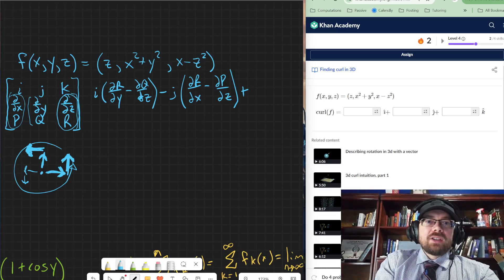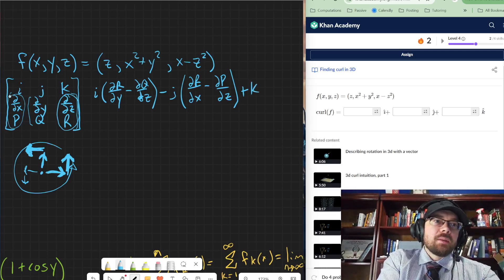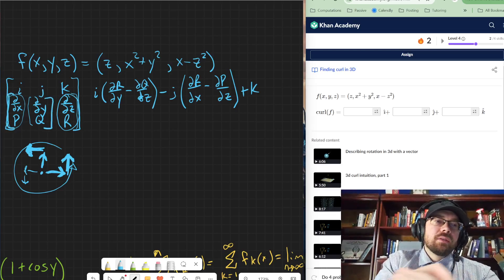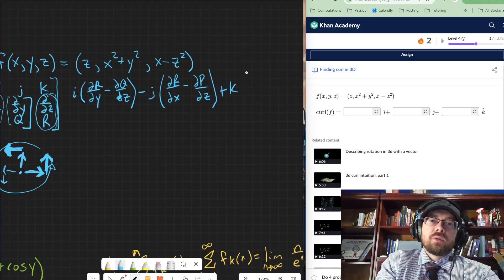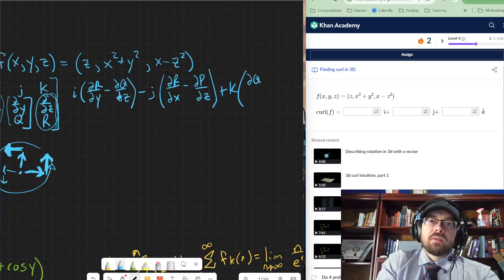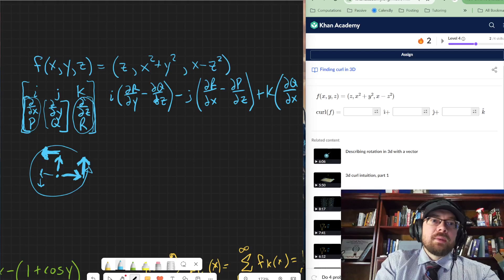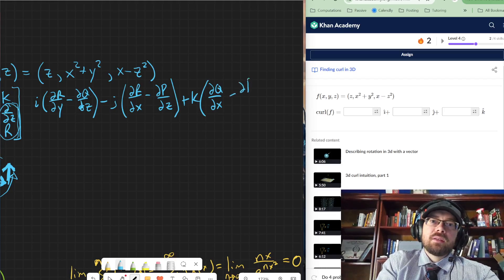So i, the j, and then we have the k vector next. So we have the k vector. And the k is going to be this last 2 by 2 matrix right here. So that's going to be the partial derivative of q with respect to x. And then that's going to be minus the partial derivative of p with respect to z.